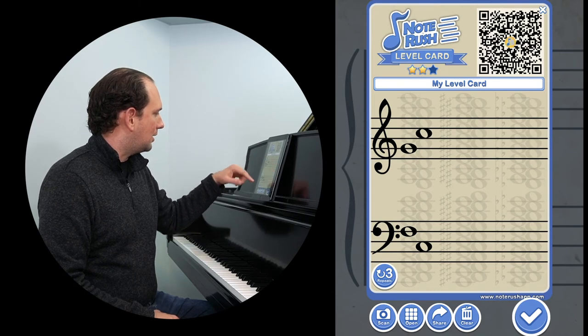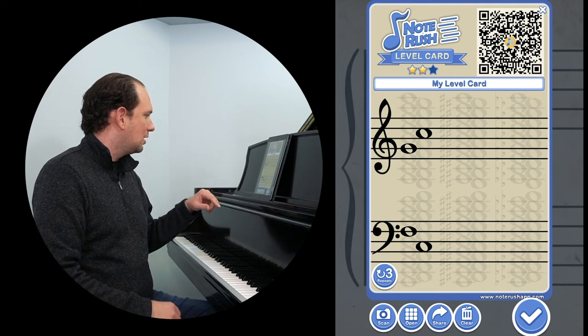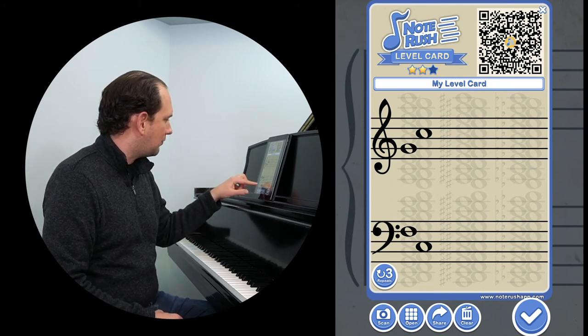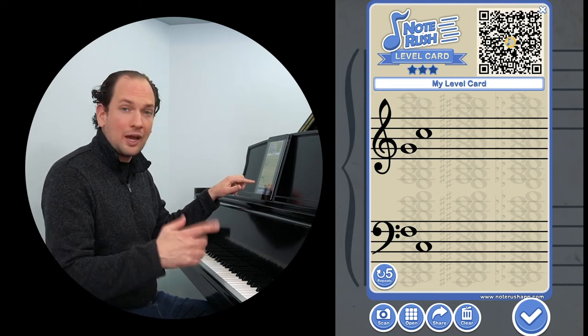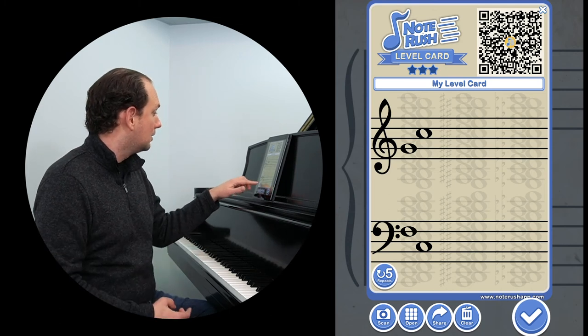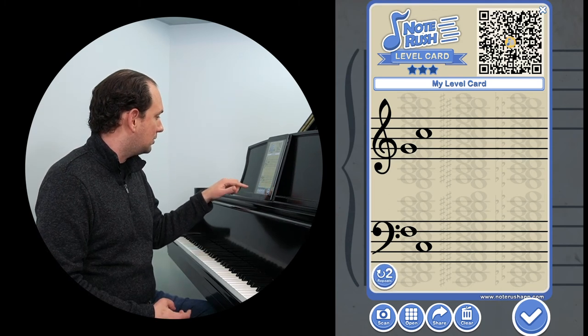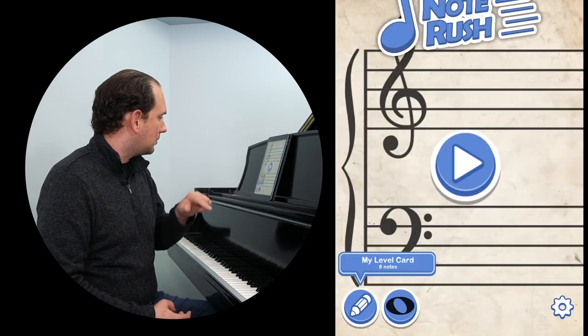So in this case, I have my two Cs, treble C, bass C, treble G, and bass F, and I can also program it how many times I want it to go through the whole cycle of asking me for those four. I'm just going to do two, I'll click the check mark.